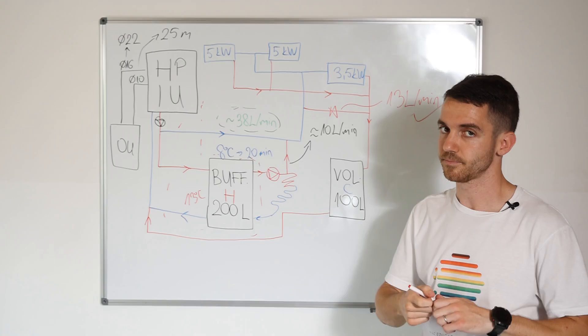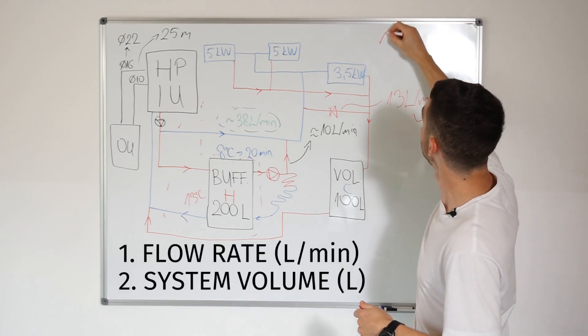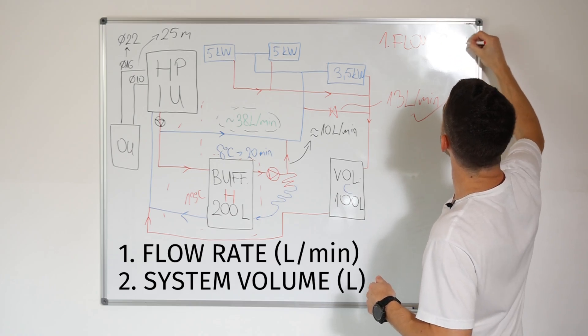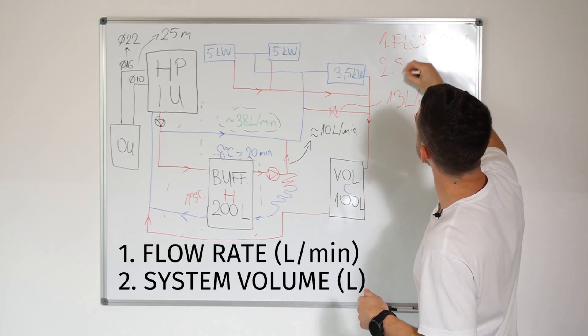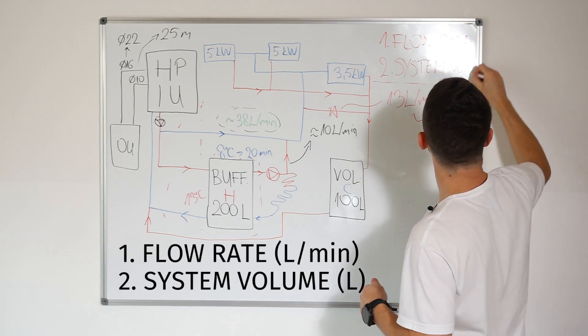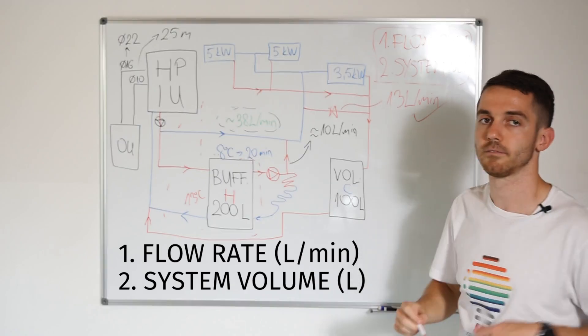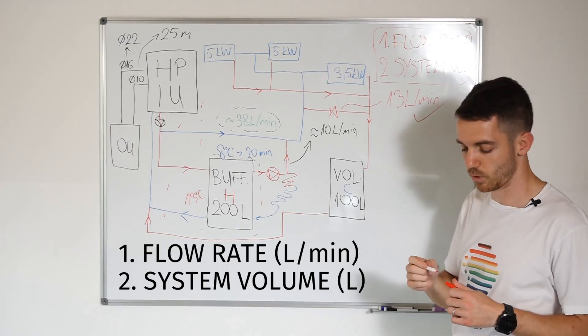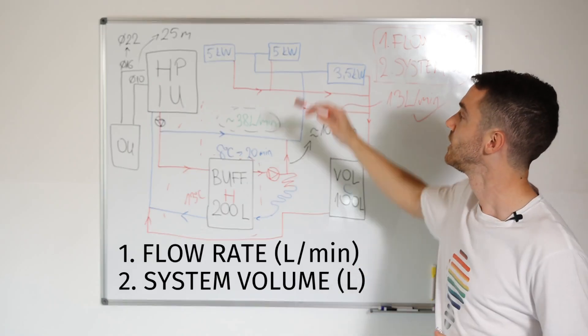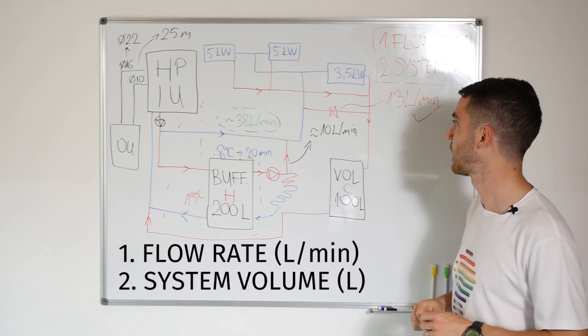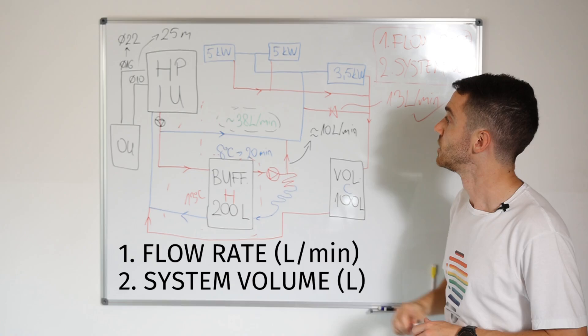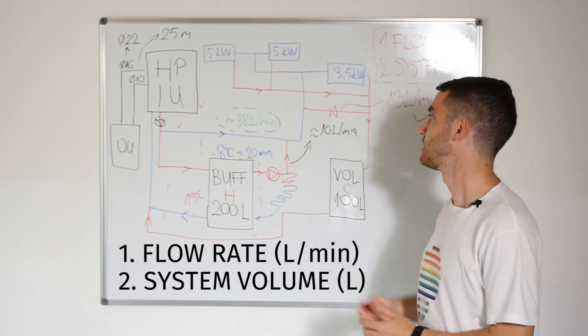So you need to ensure two things. First one is flow rate. And second one is system volume. And from hydraulic point of view, you will have everything fine. With low system volume, you will sometimes have a problem in cooling. In heating, you will not have this kind of problem. You will have a lot of cycling. But with low flow rate in cooling, you will murder the unit as this was the case.